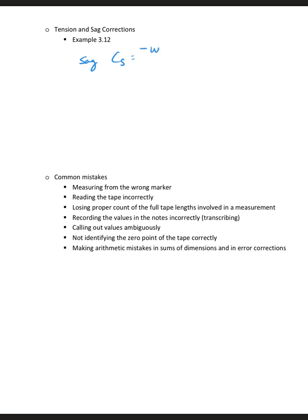There's two formulas. One is the correction due to sag is negative small w squared L cubed over 24 P squared. Little w here is what is the weight per unit length of tape. The measuring tape itself has a weight, what's the weight per foot, for example. This L is the distance measured, and P is the strength of the pull. The harder I pull the tape, the less sag there's going to be.